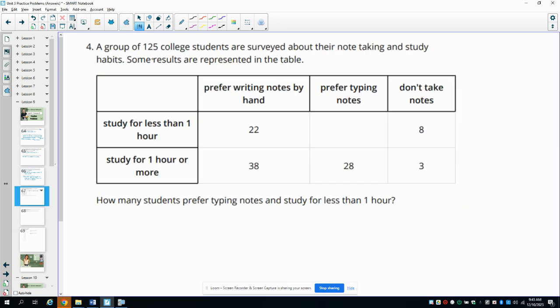Number four, a group of 125 college students are surveyed about their note taking and study habits. Some results are represented in the table below. How many students prefer typing notes and studying for less than an hour? So we're trying to fill in this spot here. And this is an either or. Do they study for less than an hour or do they study for one or more hours?